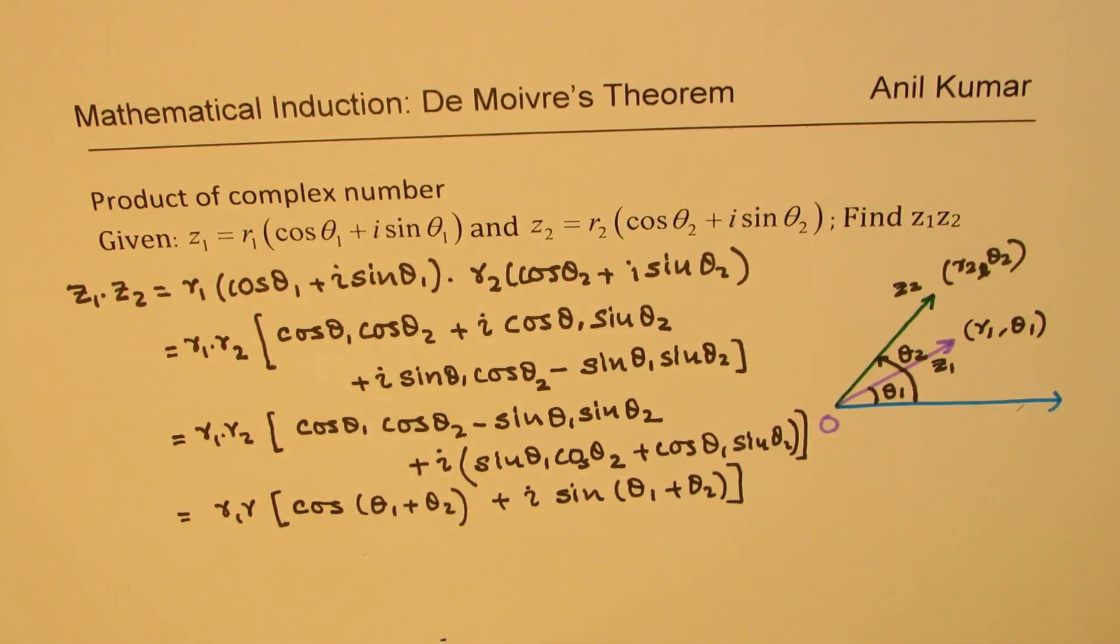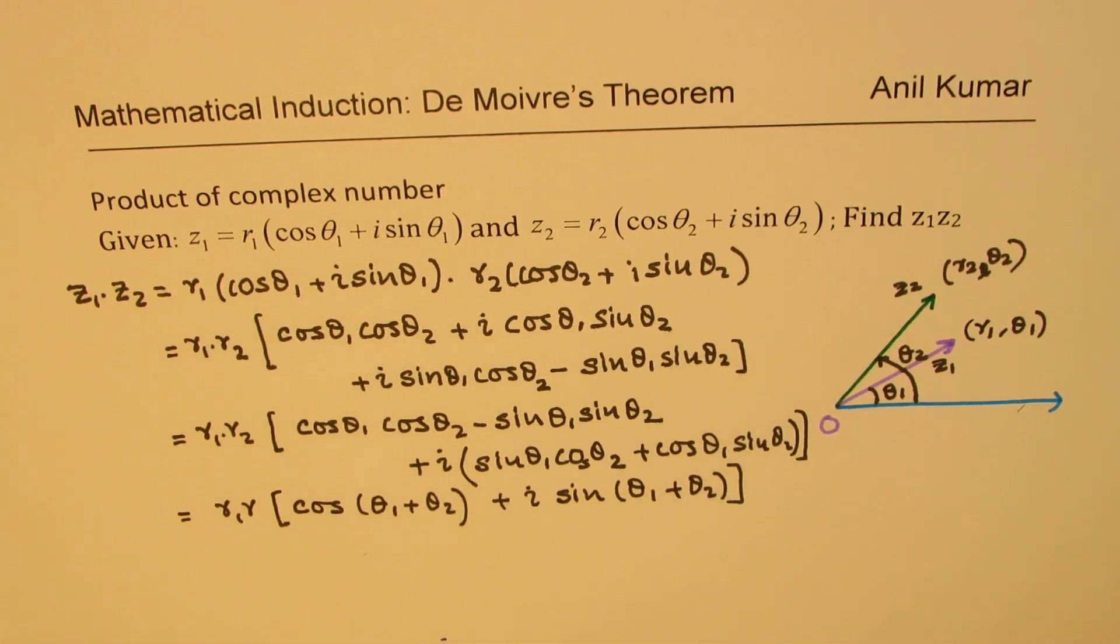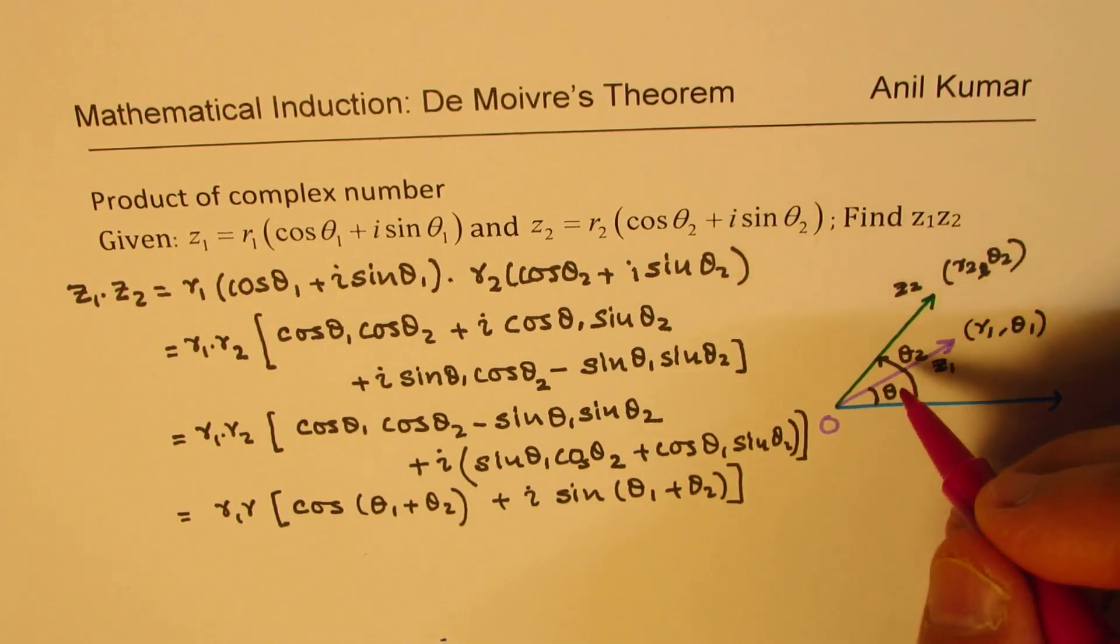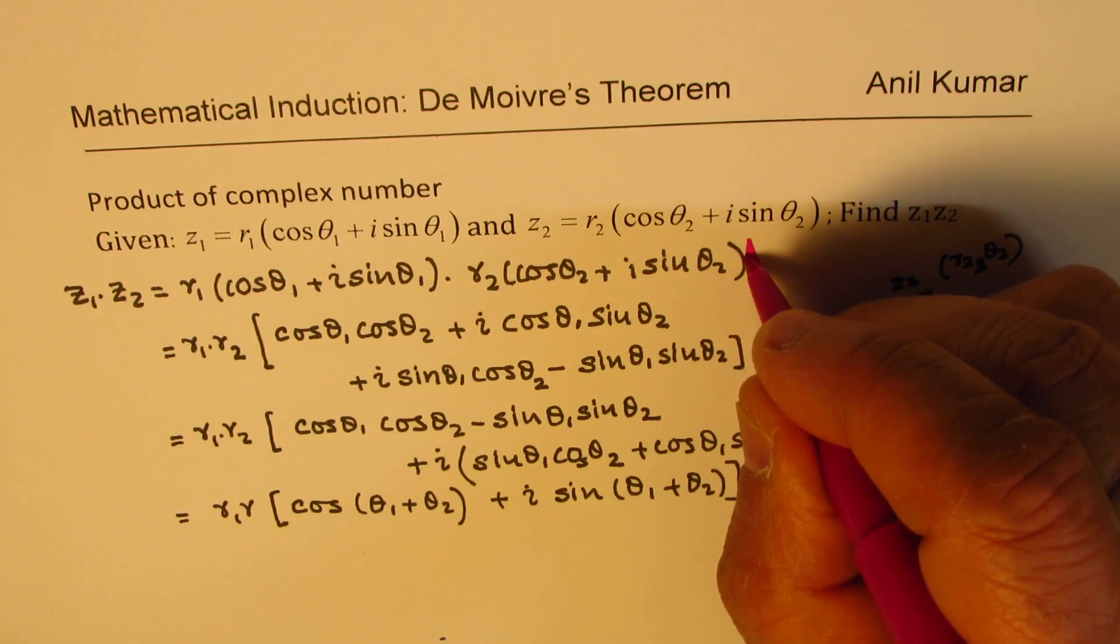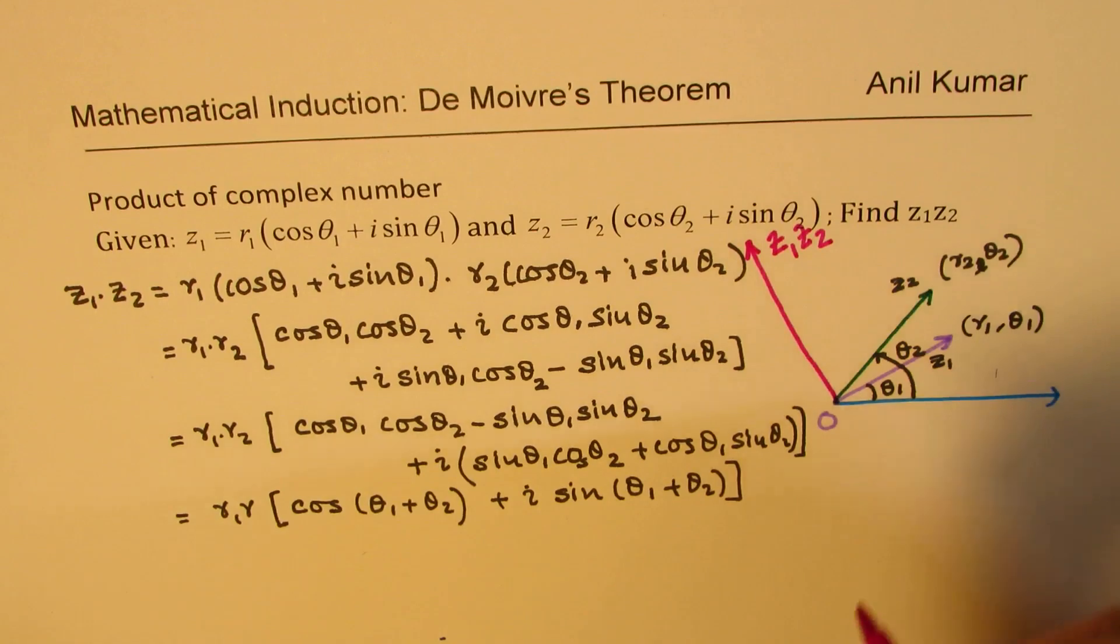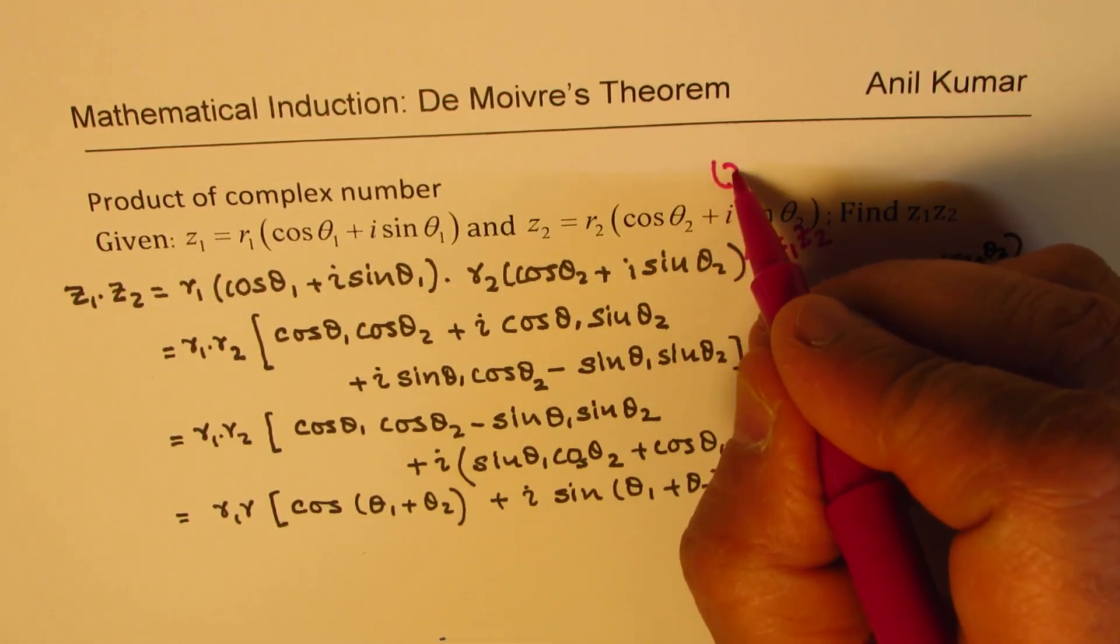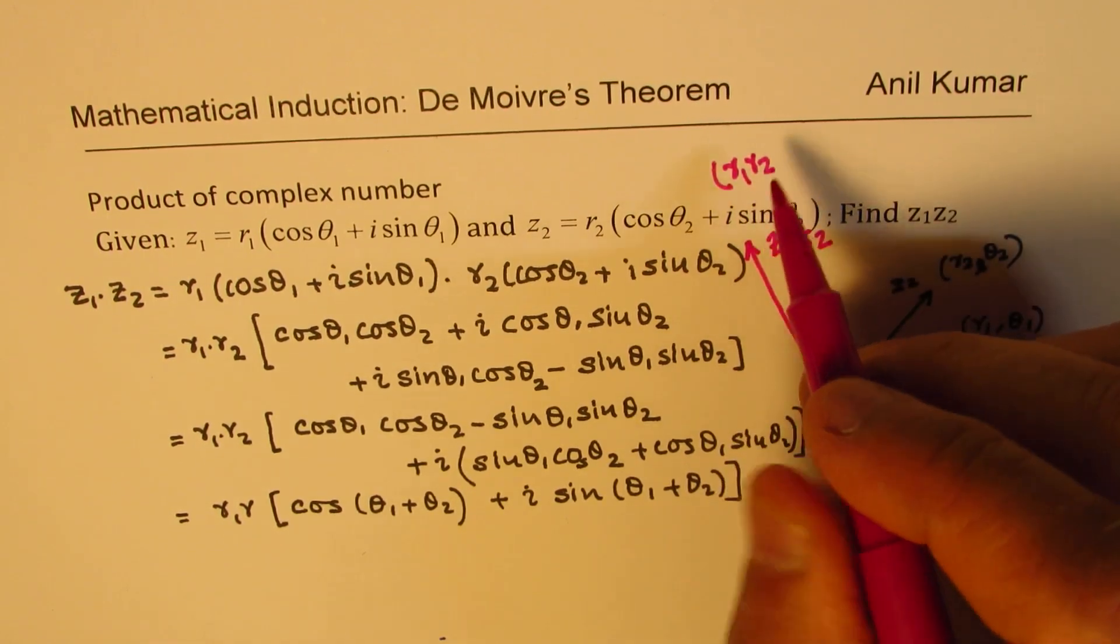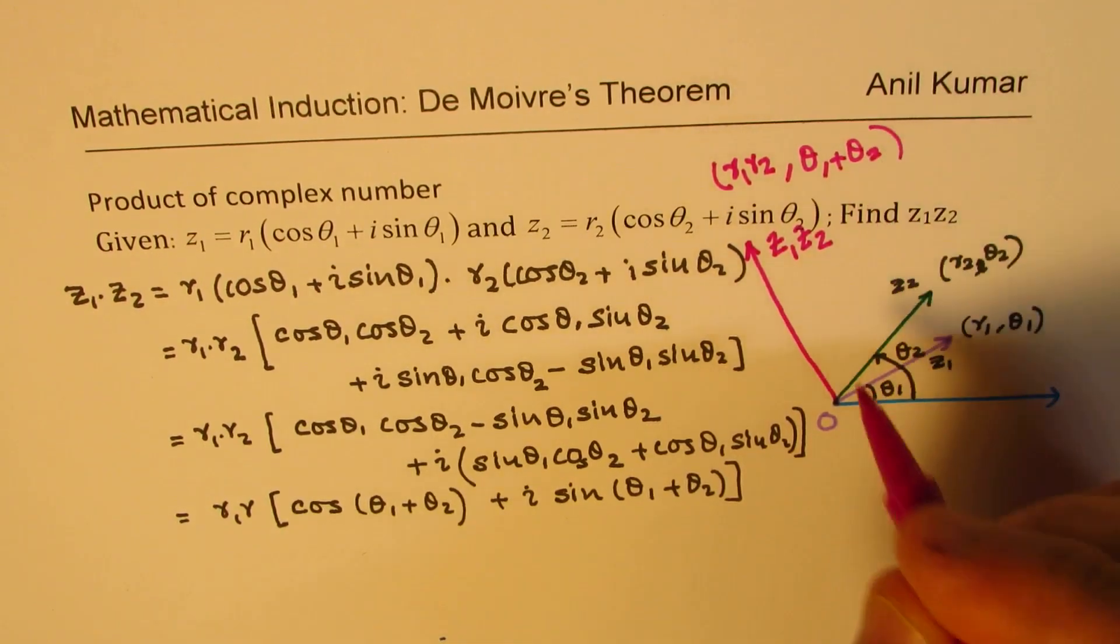So what do you notice? When we are finding the product, the absolute value becomes product of r1 and r2 and the angle is sum of theta1 and theta2. So z1 times z2 will be equal to r1·r2 with modulus and theta1 plus theta2 as the argument.